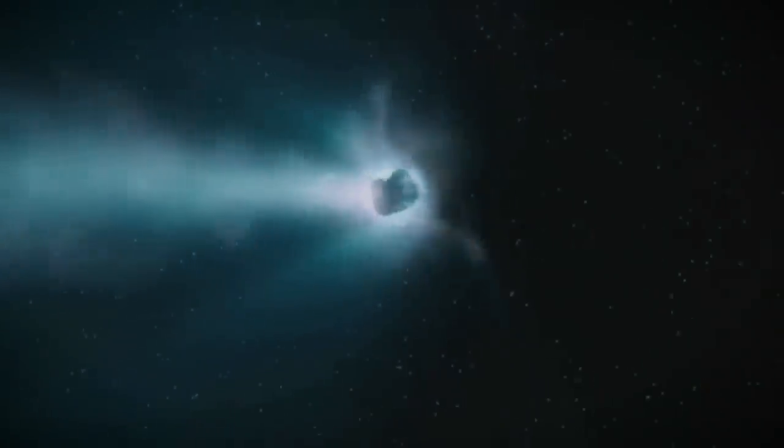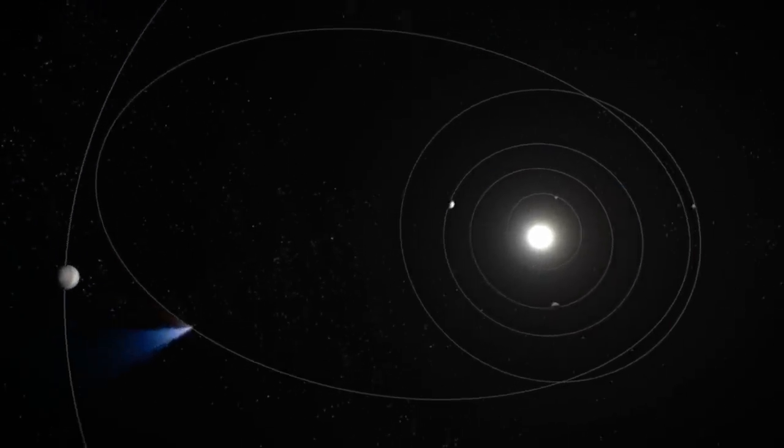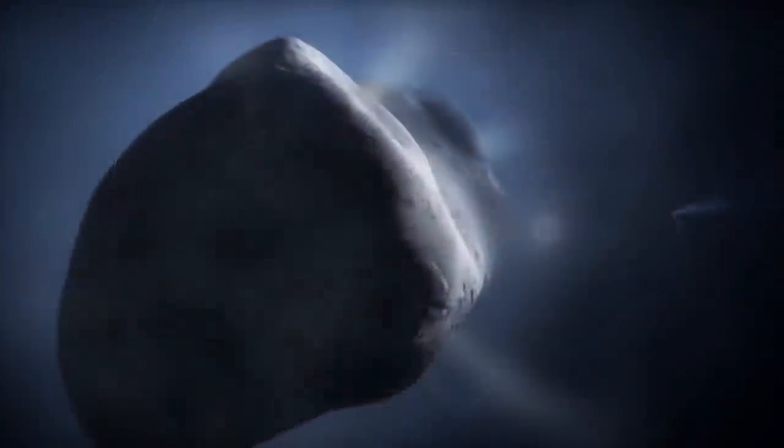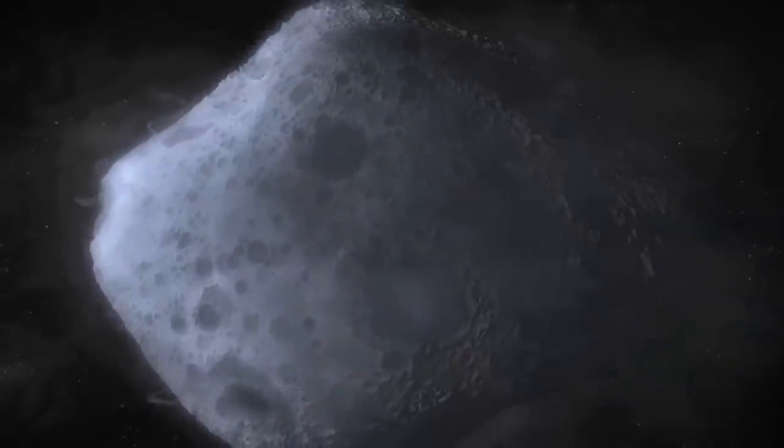If we could just land on it, we might find a bunch of clues about what happened when the Earth and Sun were first formed, and how water and life might have started on Earth. But, it's more than 300 million kilometres away, it's travelling at more than 135,000 kilometres an hour, and the whole thing is just four kilometres in diameter. And nobody's ever landed anything on a comet before. This was going to require a golf putt of epic proportions.